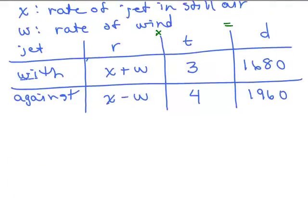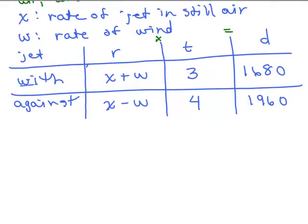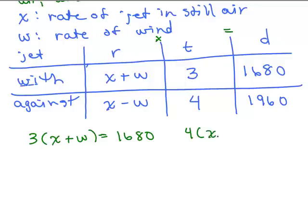Our next step would be to write those two equations. For the first equation, X plus W times 3 — which I'm going to write as 3 times (X plus W) — is equal to 1,680. And the second equation, using the information about the jet going against the wind, is 4 times (X minus W) equals 1,960.